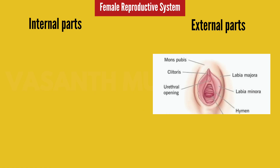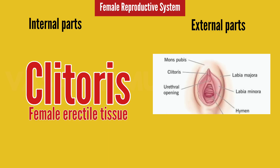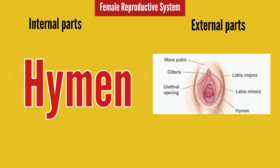Next part is the Clitoris. The clitoris is the female erectile tissue. The male equivalent is the corpus cavernosum, and that same type of tissue — corpora cavernosa — is present in the clitoris. It is very sensitive upon stimulation. Next part is the Hymen, which is a membranous structure.